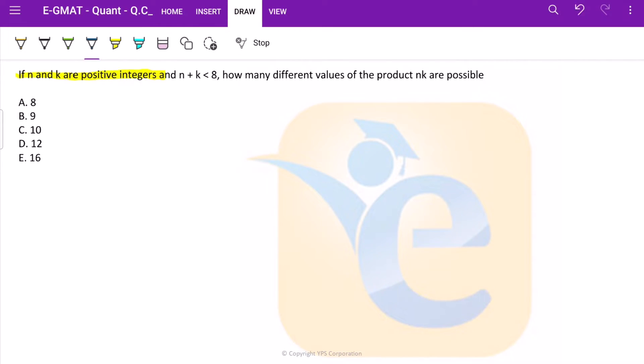If n and k are positive integers, so what do we know about n and k? That they are greater than 0. And n plus k is less than 8.